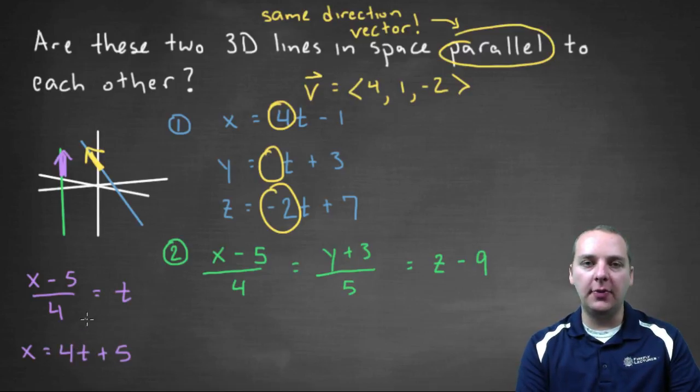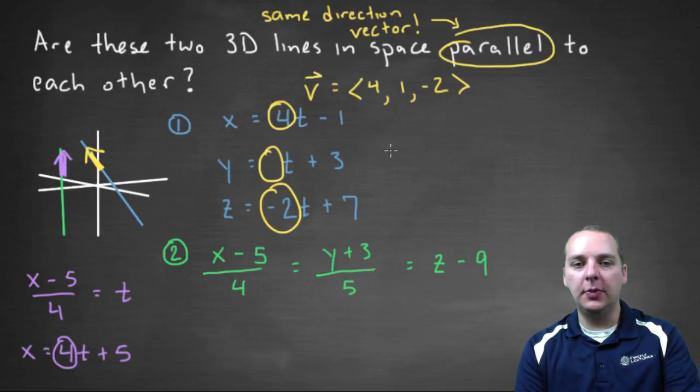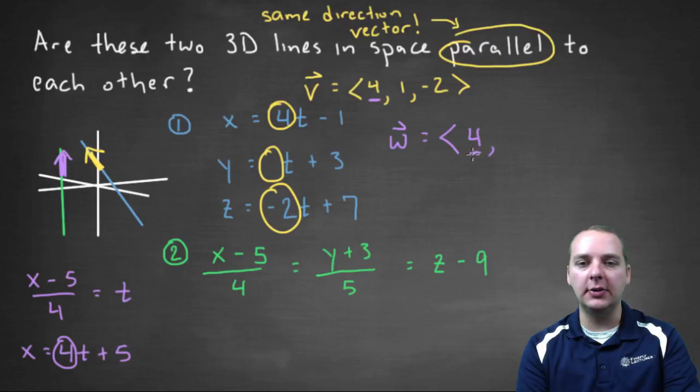So I can see right off the bat that the A in this case will be 4. So let me go ahead and start writing his direction vector. We'll call it vector w or something like that. So that's a 4. And that looks pretty promising, because that's the same ith component as the other vector. So this is looking pretty good.